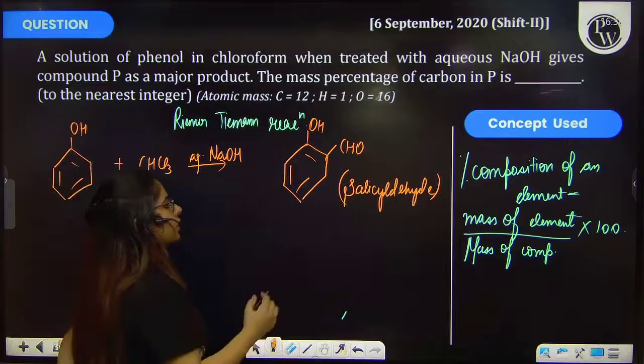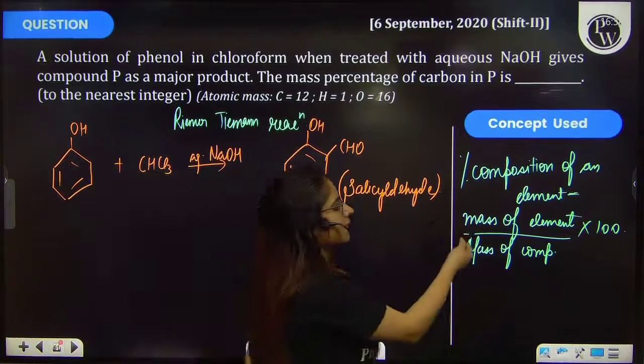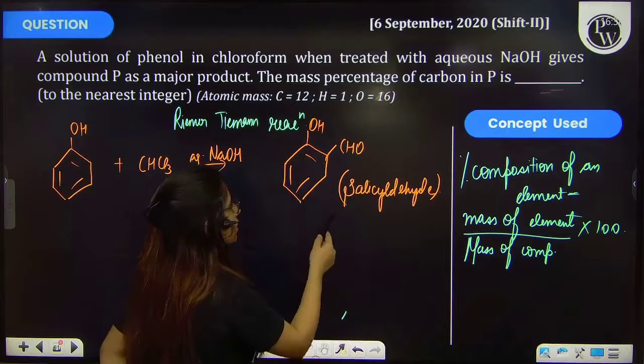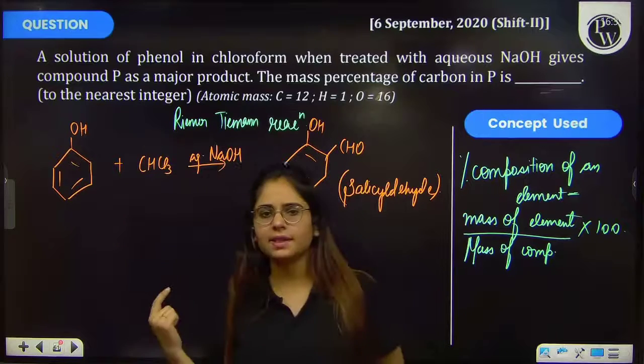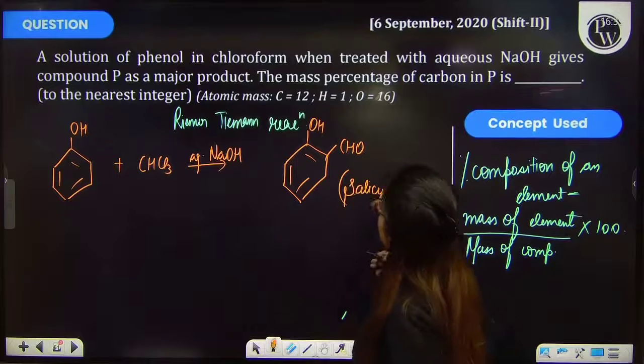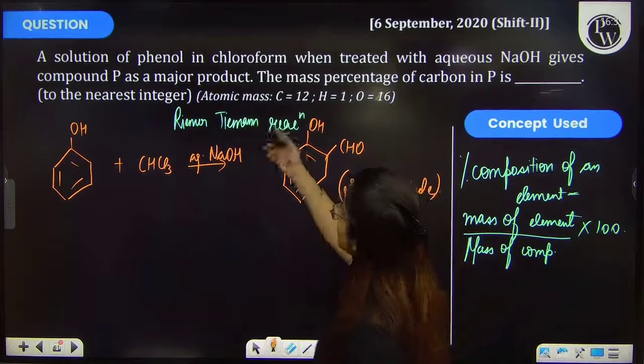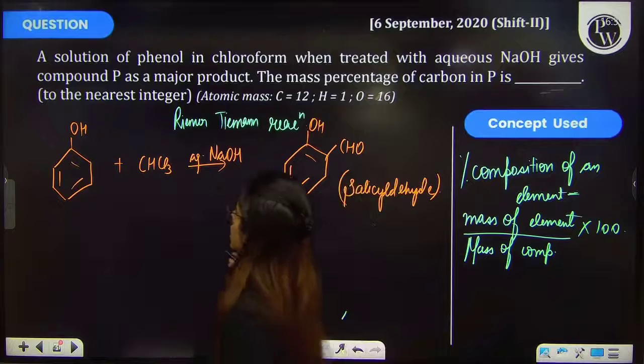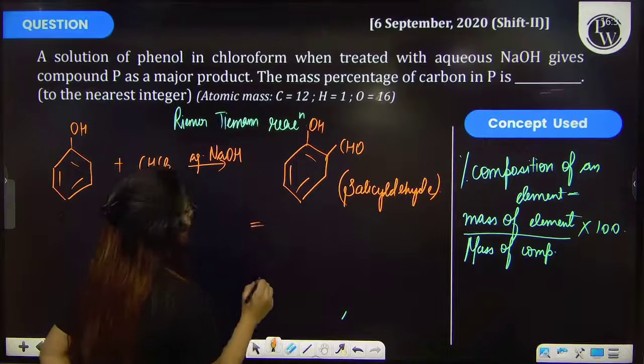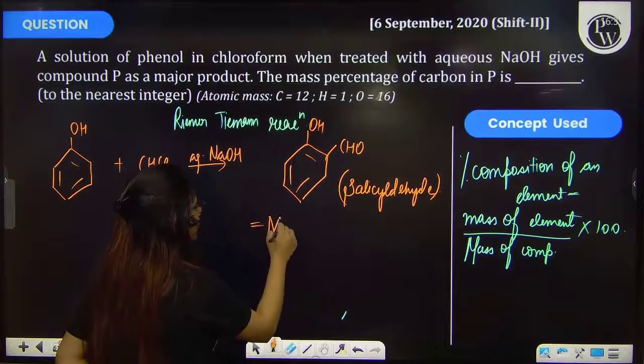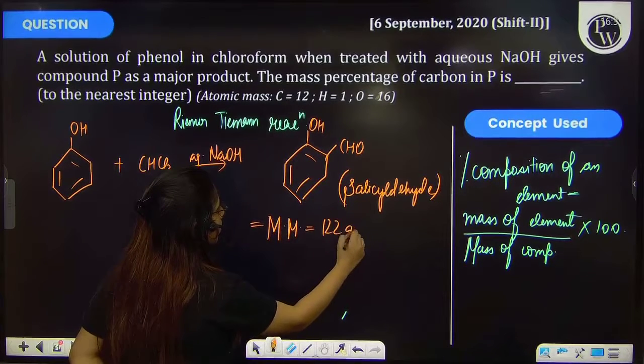Now you have to calculate the mass or the percentage composition of this element, that means carbon, that you have to calculate for the whole compound. Now you have been provided with the molar masses. If I calculate the molar mass of this whole compound, so that will be 122 gram per mole.